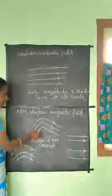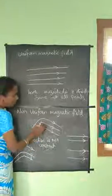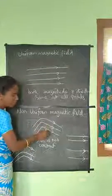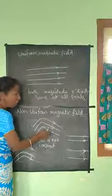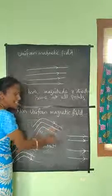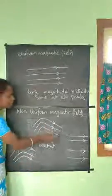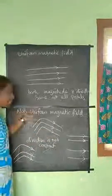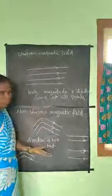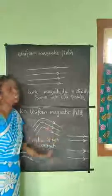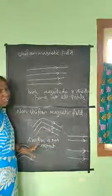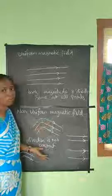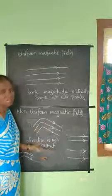In the case where magnitude is the same but direction of the magnetic field is different — that is a non-uniform magnetic field. If the magnetic field lines are in different directions, that is also non-uniform. So: if magnitude changes, it is non-uniform. If direction changes, it is also non-uniform.